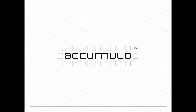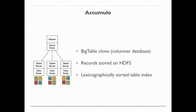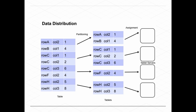Accumulo is another Apache project — it's a BigTable clone, a columnar NoSQL database. Its records are stored in HDFS where data is sharded across the cluster, stored in a lexicographically sorted table index — a one-dimensional sorted index of values. You can think of it as a key-value store where the key is roughly a row and a column. The master knows where all the data lives. When you make requests and say give me row C through row F, it knows where to ask and grab that data.